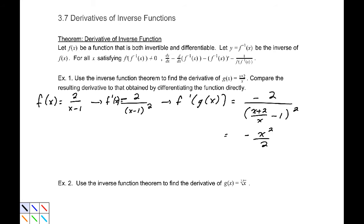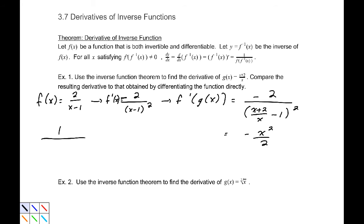So that is the derivative of the inverse. We take the inverse function, take its derivative, compose that with the original function, and simplify. But I skipped a step — I need 1 over that function. So 1 over f prime of g(x), giving us the function negative 2 over x squared, and that is the derivative of the inverse.